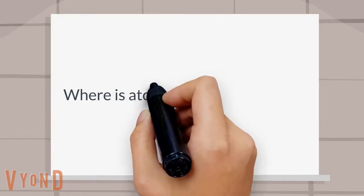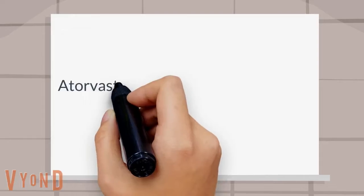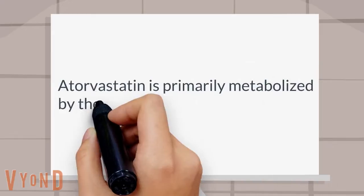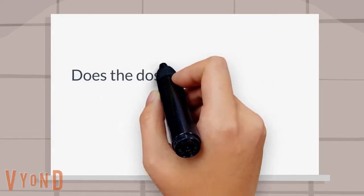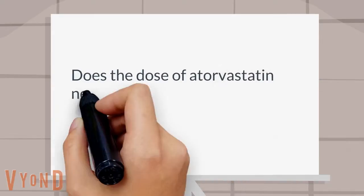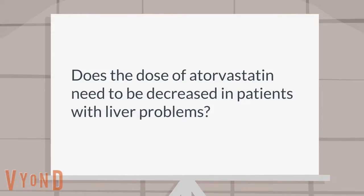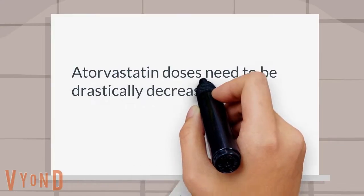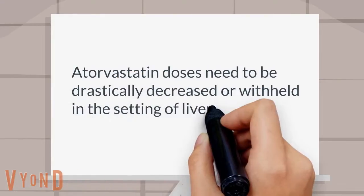Where is atorvastatin metabolized? Atorvastatin is primarily metabolized by the liver. Does the dose of atorvastatin need to be decreased in patients with liver problems? Atorvastatin doses need to be drastically decreased or withheld in the setting of liver failure.